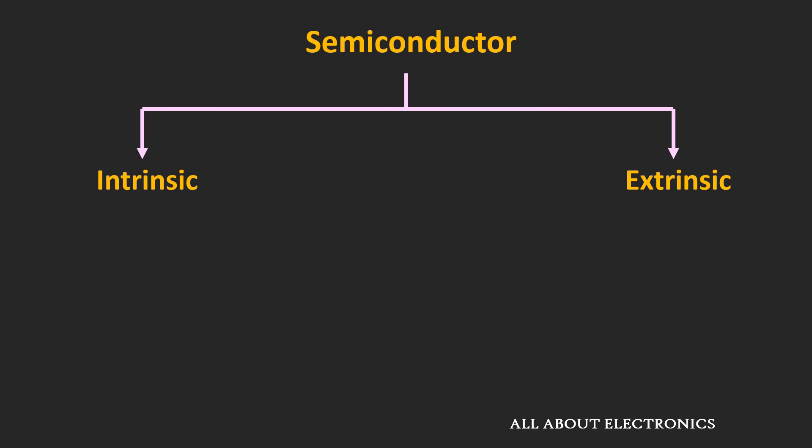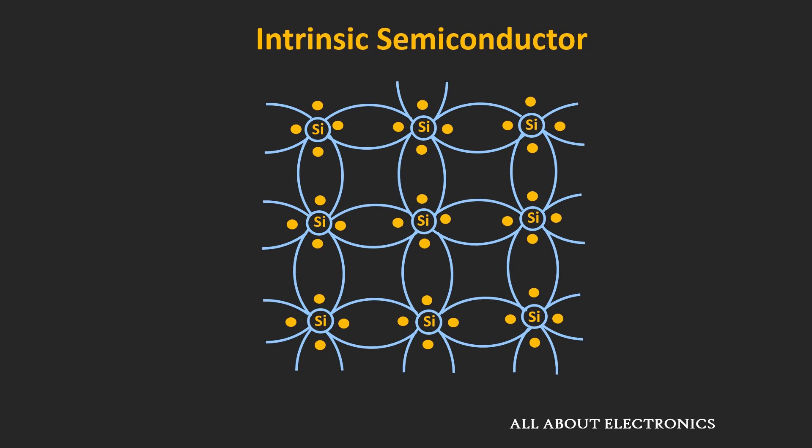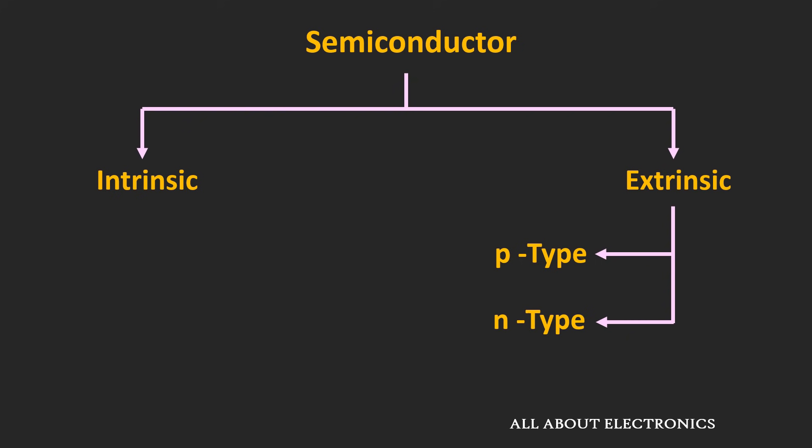Semiconductors can be classified into two categories: intrinsic semiconductor and extrinsic semiconductor. An intrinsic semiconductor is a pure semiconductor without any impurity atoms — in a silicon crystal all atoms would be silicon atoms. In an extrinsic semiconductor, external impurities are added to change the conductivity, and the process of adding these impurities is known as doping. By doping, we can change the conductivity and control the semiconductor to behave in a specific manner, which is why semiconductor materials are preferred in the electronic industry.